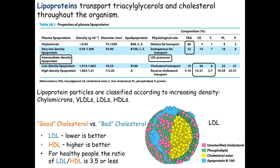Think of chylomicrons as taxis at the airport. They need to go back to the blood vessels of the small intestine to get more triacylglycerols. You can't go backwards through the blood, and going forward through the entire body circulation gives very little chance of ending up back where you need to go. So they get off the main highway and take the lymphatic system — a very low pressure, low volume, very slow system — from the liver back to the intestinal cells of the small intestine to pick up more triacylglycerols. Chylomicrons pick up triacylglycerols, bring them to the liver through the blood, then take the lymphatic system back to the small intestine cells. That's their entire role — they never leave that circulation.